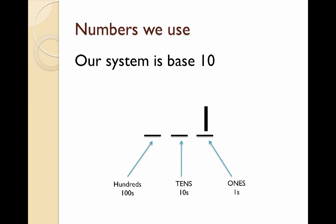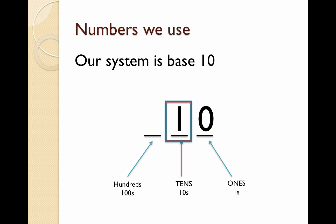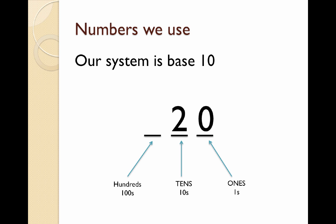Let's go back to our base system for a second and look at how we count. Going up by ones, when we get to the number nine we automatically jump and put a one in the tens column, and we put a zero in the ones column to show that we don't have any ones. If we continue to count, our numbers go all the way up to another nine in the ones column, then we add one to the tens column. That's our number system that we're comfortable with.